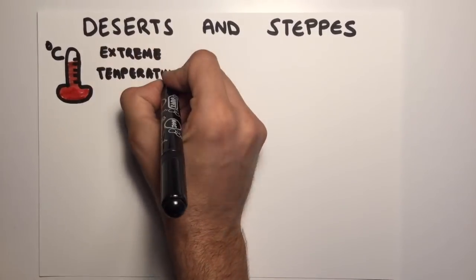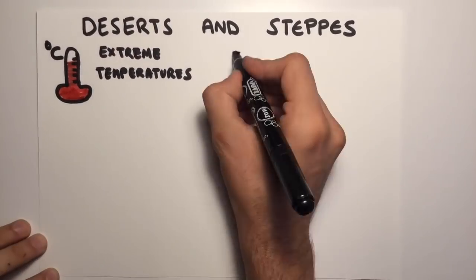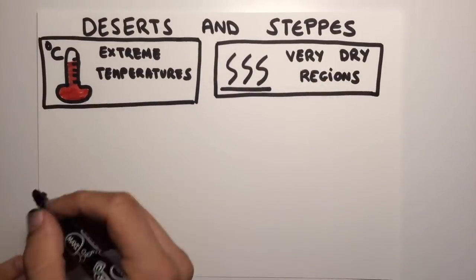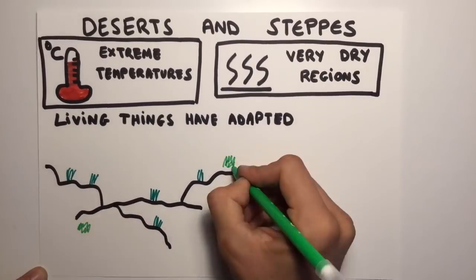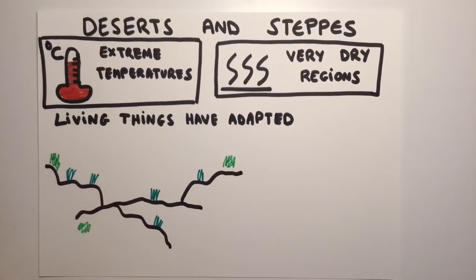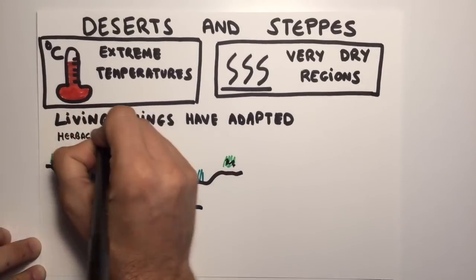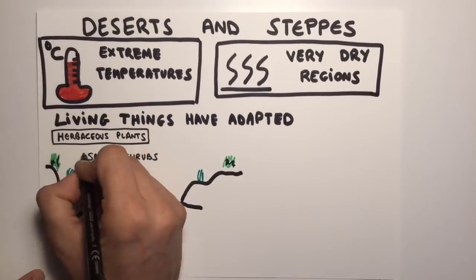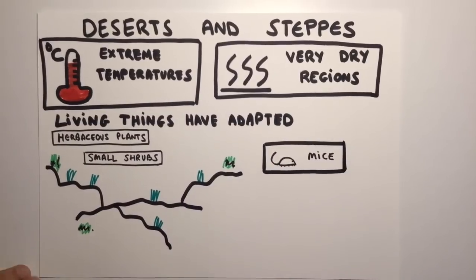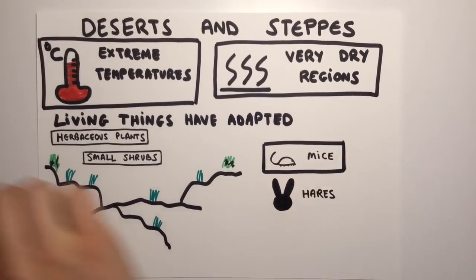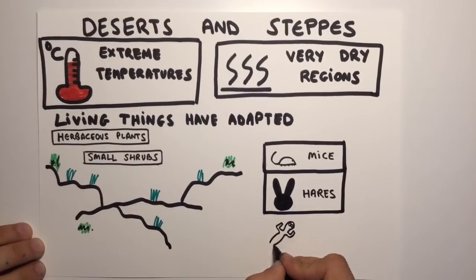Finally, we've got the deserts and steppes. They are found in very dry regions with extreme temperatures. Living things in these ecosystems have adapted to these conditions. The flora here includes typical plants like herbaceous plants such as grasses, or small shrubs like thyme. The fauna in deserts and steppes includes animals like hares, mice and lizards.